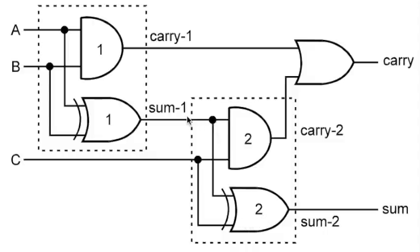Sum two is the output of XOR gate two, with one input connected to sum one with equation A ⊕ B and the other input as C, so the output is A ⊕ B ⊕ C. The final carry output is generated using an OR gate. Carry one has equation A · B and carry two has equation C · (A ⊕ B), so the final carry output = A · B + C · (A ⊕ B).